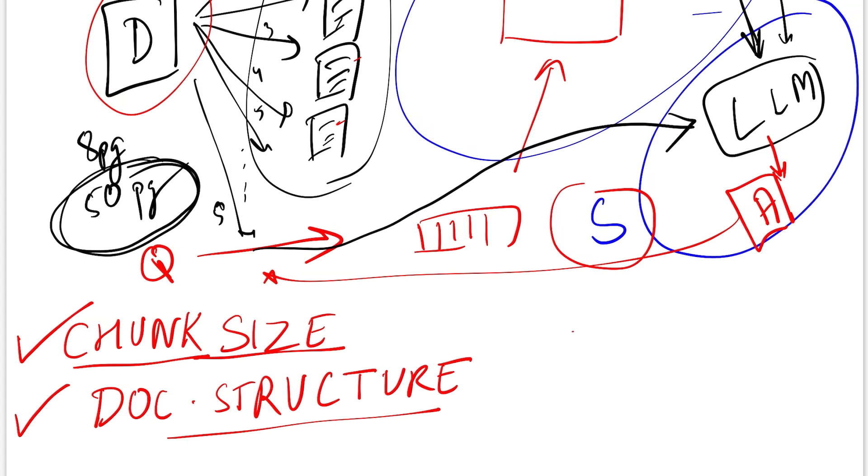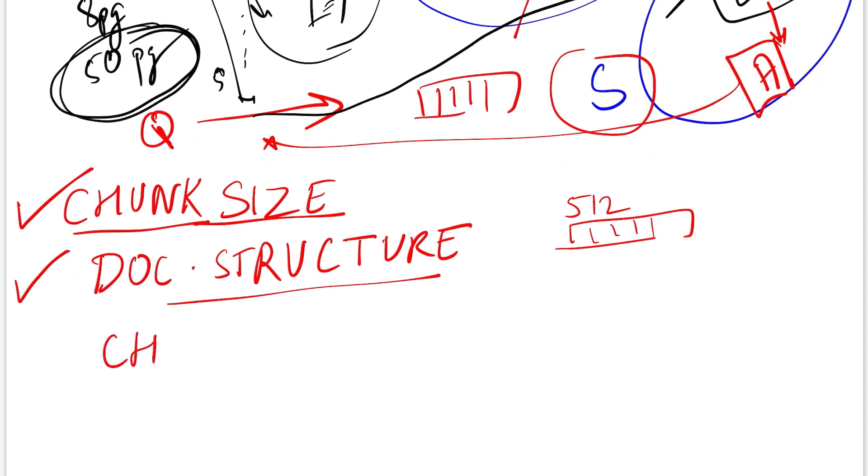Because if it was plain text, you could have simply done it at some, let's say, 512 chunk by creating a sliding window. In real-world applications, you'll get a document that has a lot of structure. So how do you creatively embed those as well will define the accuracy of your retrieval system. The third aspect is the chaining of documents.